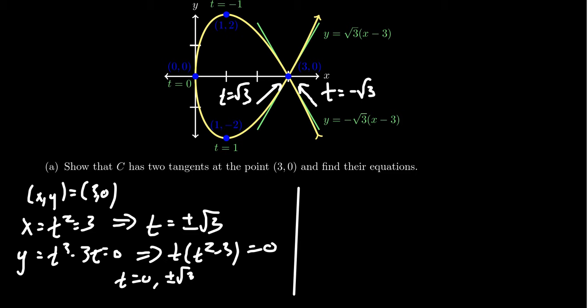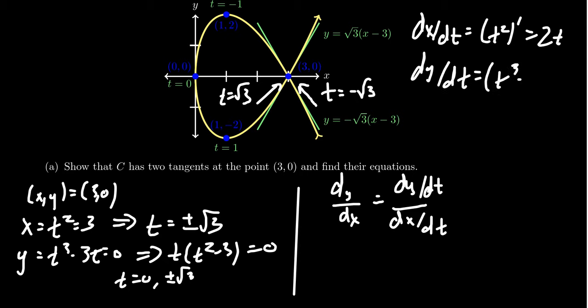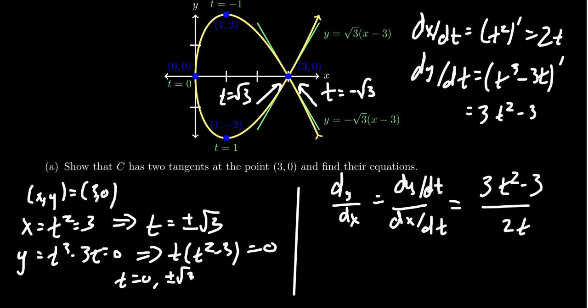Can we find an equation? The first thing to do is compute dy over dx, which is dy over dt divided by dx over dt. The derivative of x with respect to t is 2t. The derivative of y with respect to t for t cubed minus 3t is 3t squared minus 3. So dy over dx equals 3t squared minus 3 over 2t. That is our first derivative. You can also factor this as 3 halves times t squared minus 1 over t.